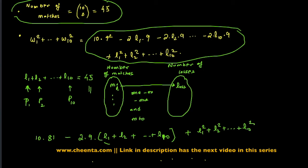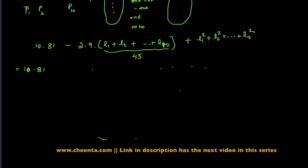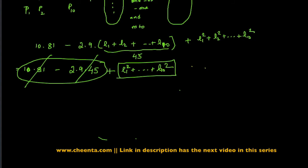Now coming back to this equation, we have 10 times 81 minus 2 times 9 times (L1 plus L2 up to L10), and the sum of the squares of the losses. Now this is 45, so 10 times 81 minus 2 times 9 times 45 plus L1 squared up to L10 squared. These two cancel off, they are of the same value, so we are left out with just L1 squared up to L10 squared on the right-hand side.